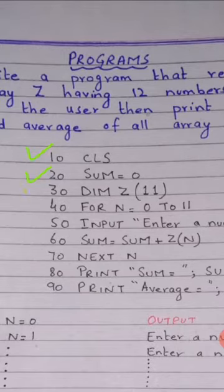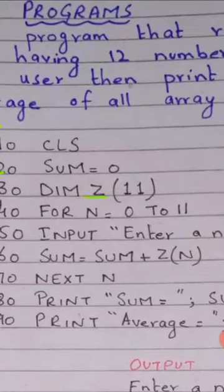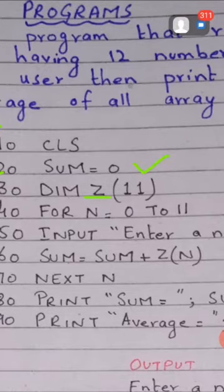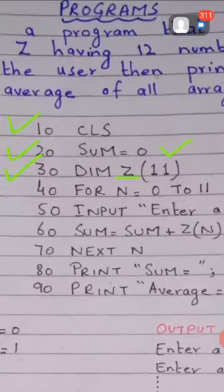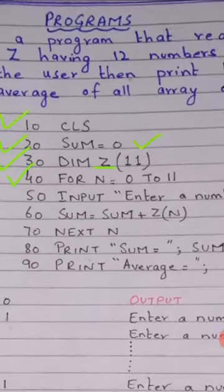Line number 30: here we have the array declared using the DIM statement. The DIM statement uses the array name, and because we have 12 numbers to store, we declare the size as 11. Size 11 means index 0 to 11, which means 12 numbers are stored. Line number 40: for n is equal to 0 to 11. Here we start looping from 0 to 11, so we store 12 numbers.